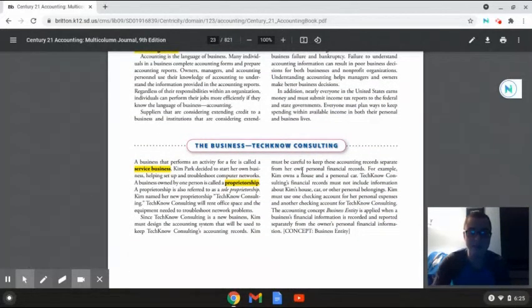And the business that we'll be using in this first part is technical consultant. So a service business is a business that performs an activity for a fee. And a proprietorship is a business owned by one person. A proprietorship is also referred to as a sole proprietorship.